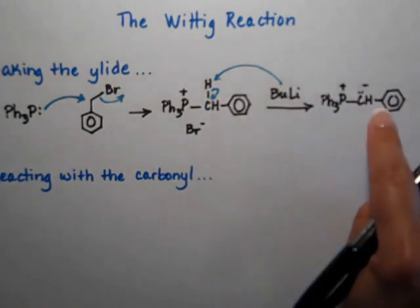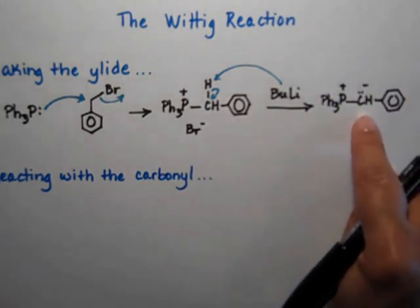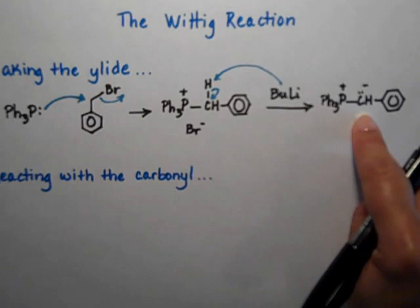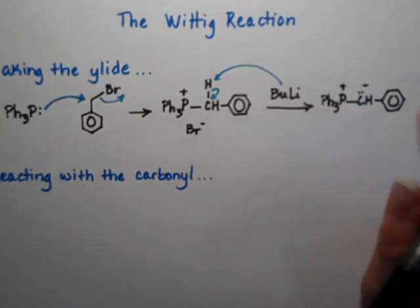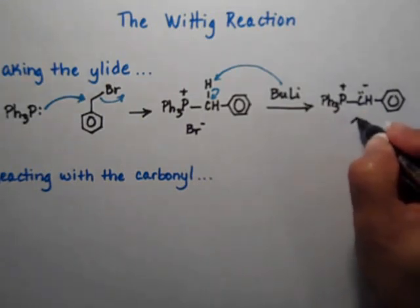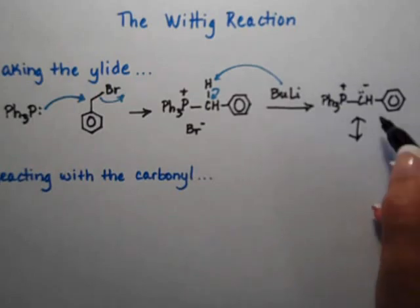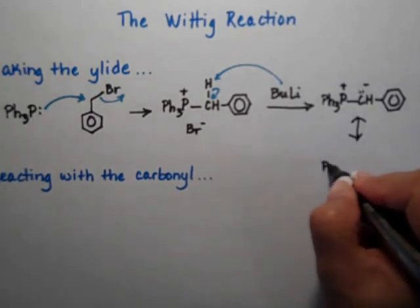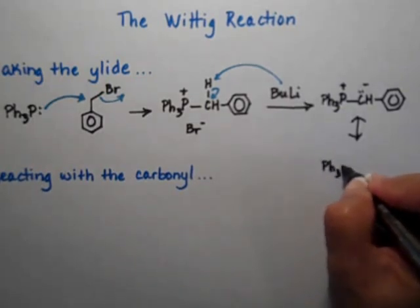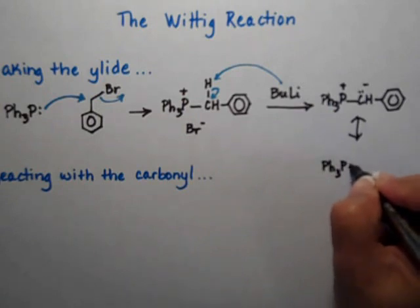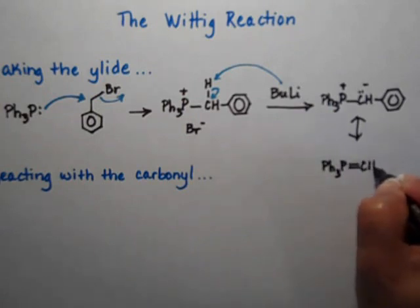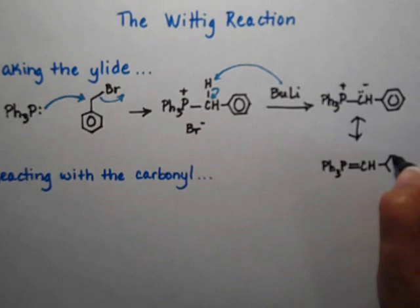And if you were to draw the mechanism of the reaction, it's much better to actually do it with the negative carbon. But there's a resonance form in which you put the electrons, the lone pair of electrons on the carbon in between the carbon and the phosphorus. So you do have the double bond right here.